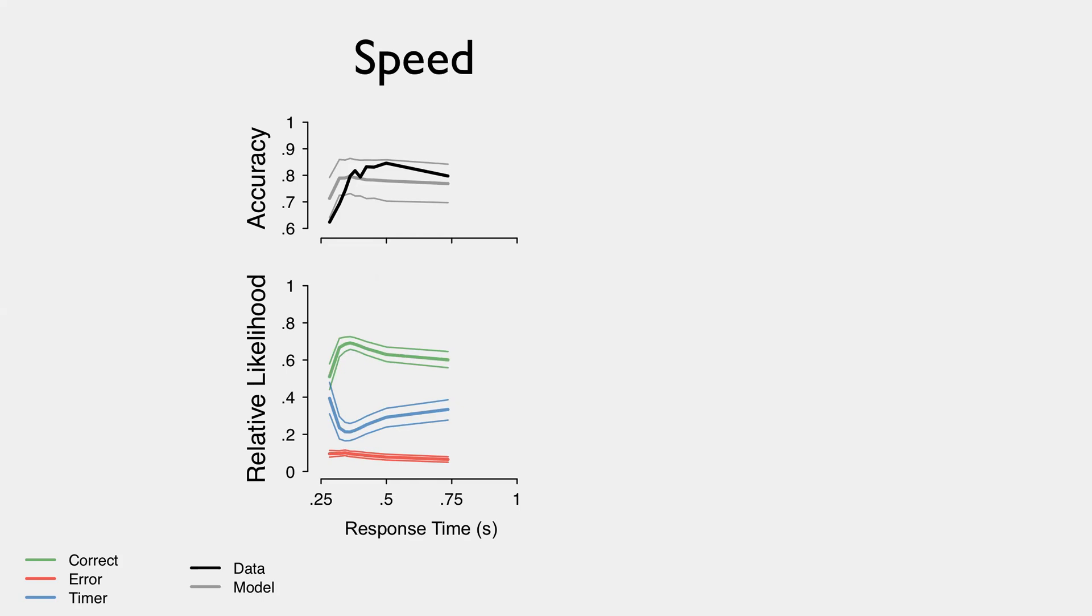And the way it does that, we can look at through a figure of the relative likelihood or the probability that each of the three accumulators in a race, so the correct and error and the timer, have hit threshold before the other two accumulators as a function of time.